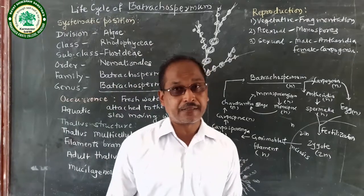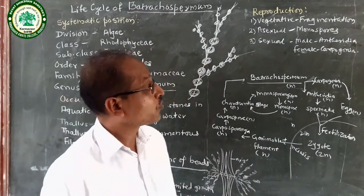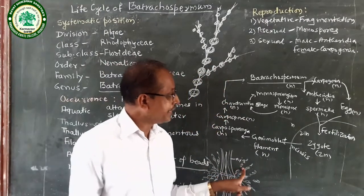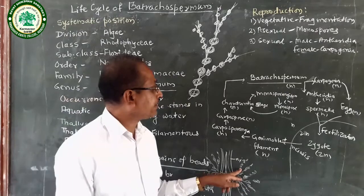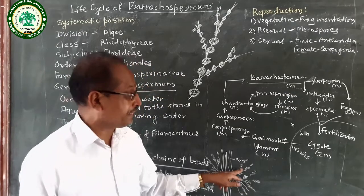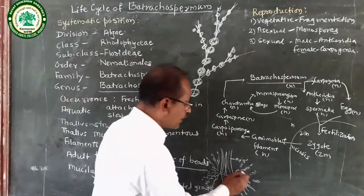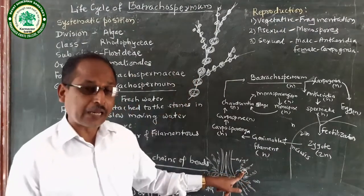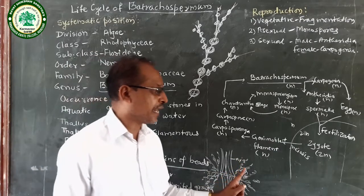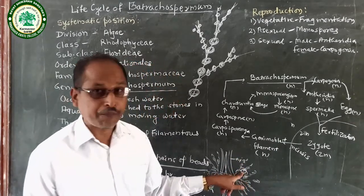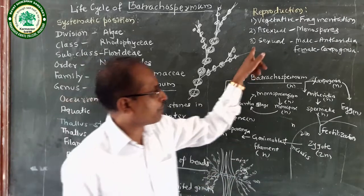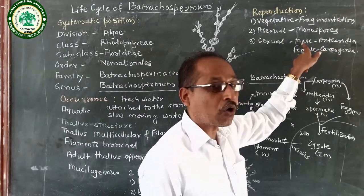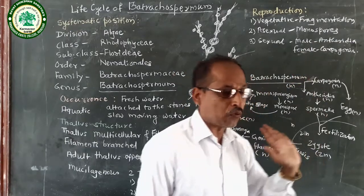After the zygote is formed, meiosis takes place. It forms a gonimoblast filament, which develops into Carposporangia. In Carposporangia, carpospores are present. The carpospores germinate and develop into the Chantransia stage, which then develops into Batrachospermum. In this way sexual reproduction takes place by male organ Antheridium and female organ Carpogonium.